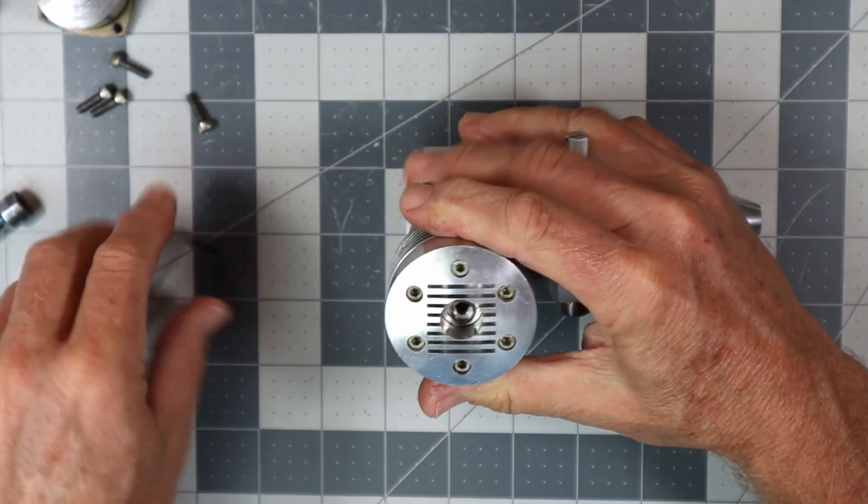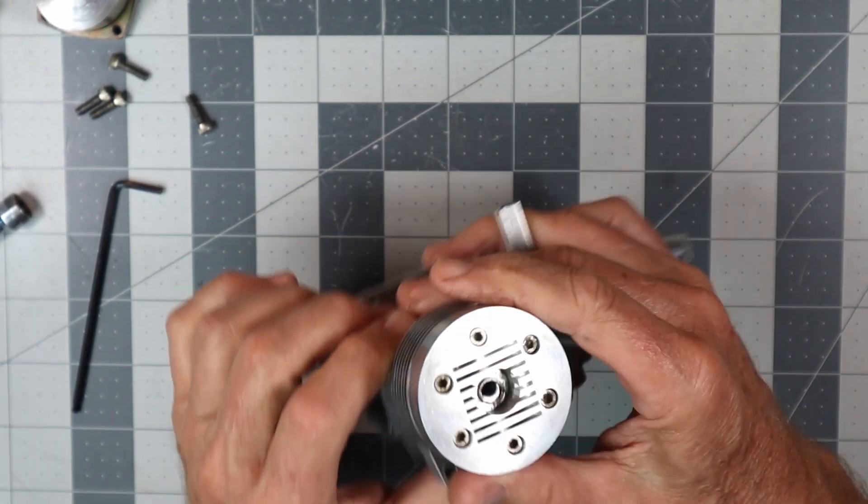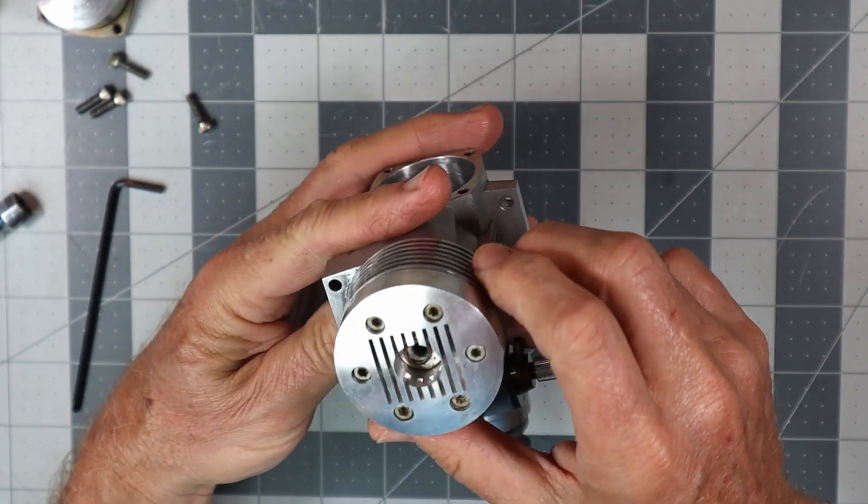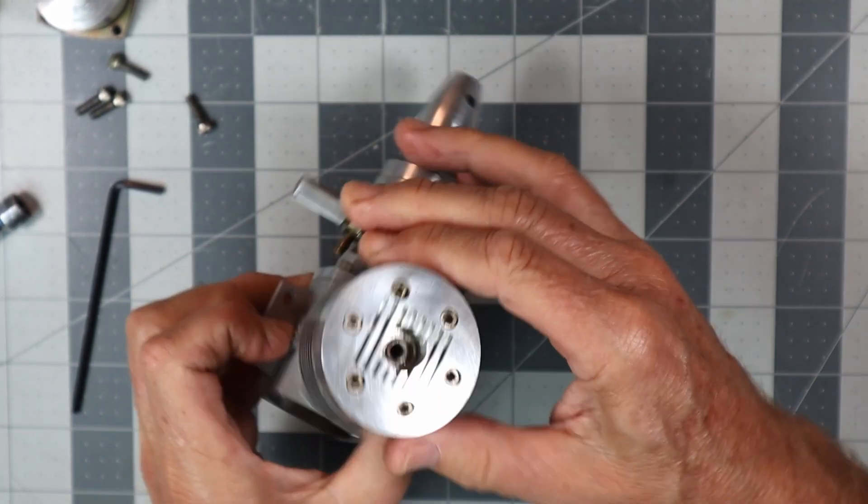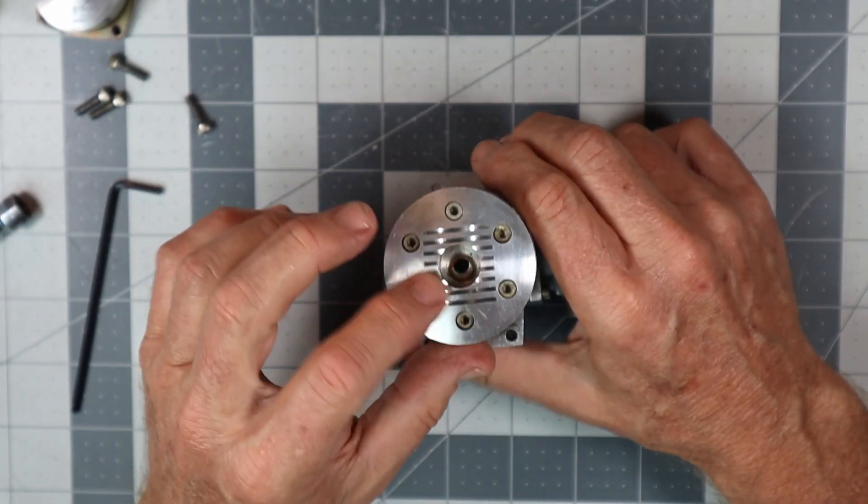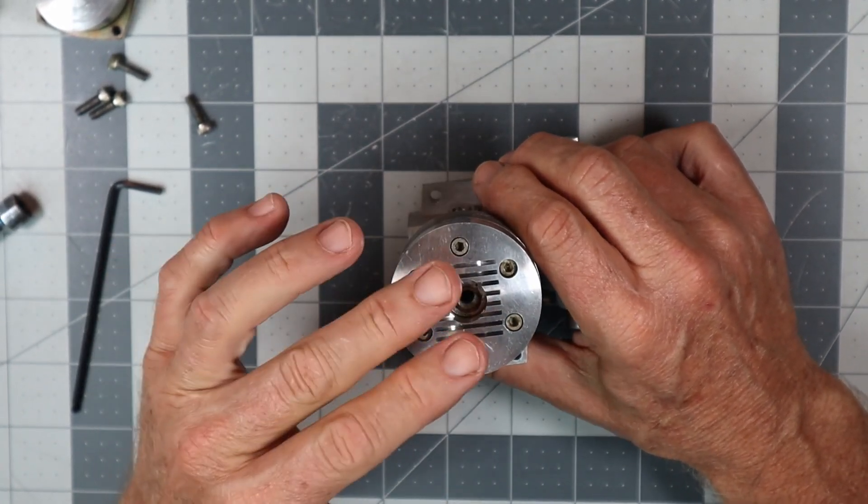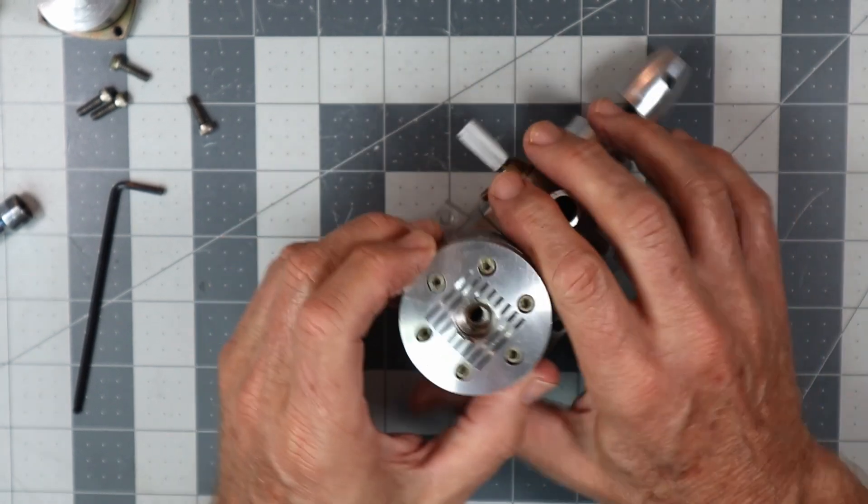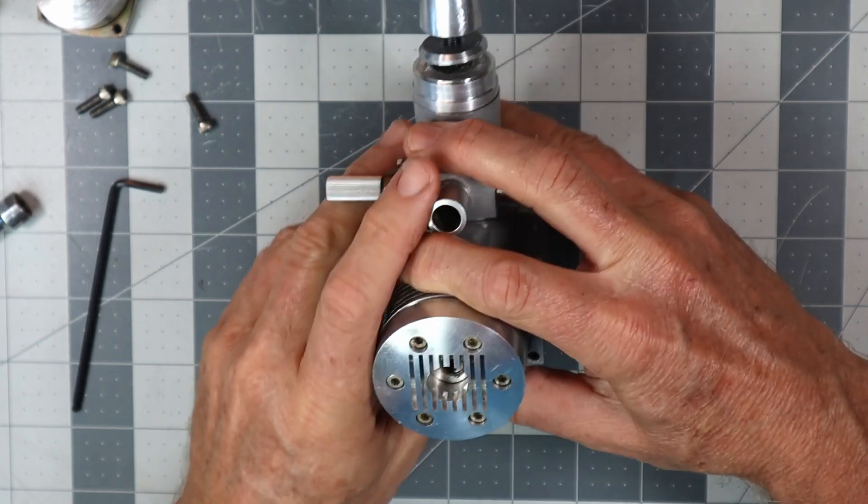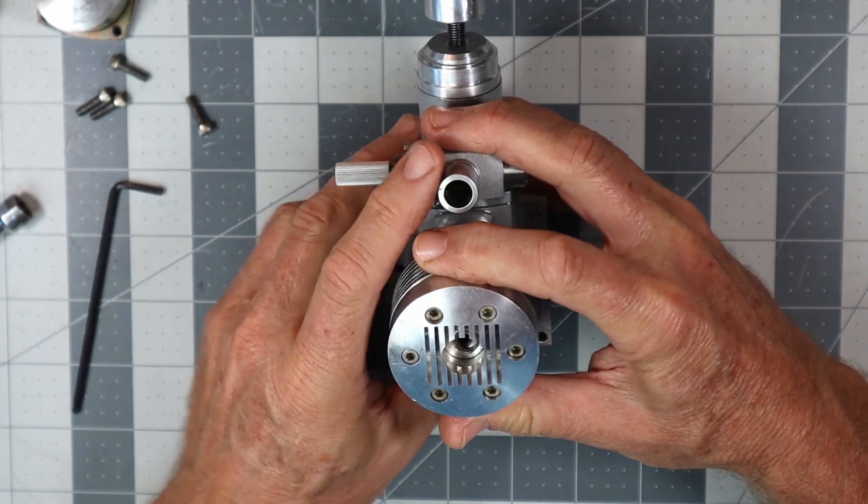Now before I take all these screws out, I want to see, I don't know if you're going to be able to tell or not. Maybe I'm seeing an optical illusion. I thought it looked like these cooling fins in here, I thought it looked like they weren't symmetrical. But I think it's just the angle you look at.